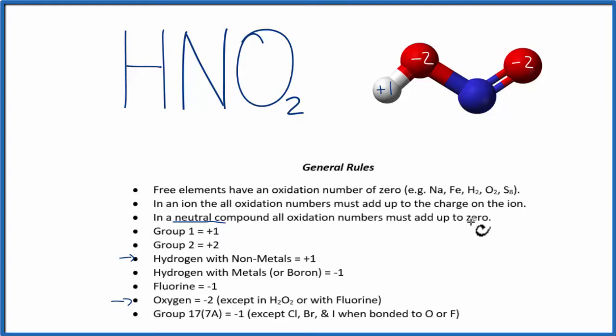All the oxidation numbers they add up to zero so we can think of it this way. We have a plus one and then minus two minus two so that'd be minus four and a plus one minus three.